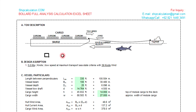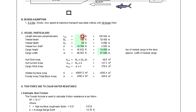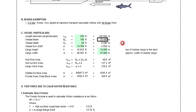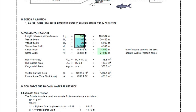The design assumption is five knots tow speed at maximum transport system criteria with 39 knots wind. The vessel particulars: LBP (length between perpendiculars) is 330 feet or 100 meters, vessel beam is 100 feet or 30 meters, vessel depth is 20 feet. You need to input values in the red-highlighted cells.